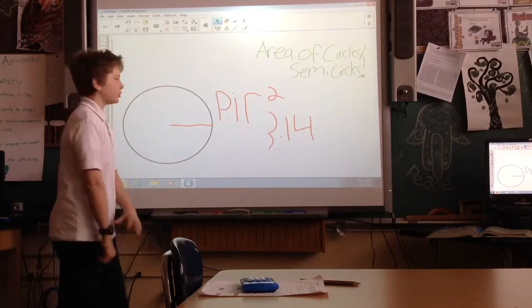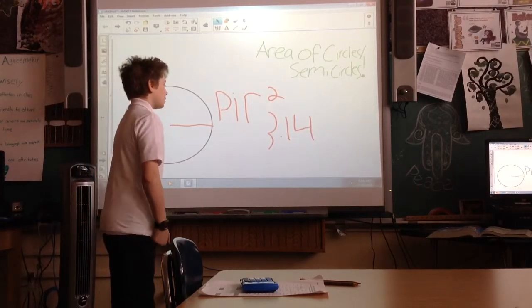To find the area of a circle, you need to take pi times radius squared.